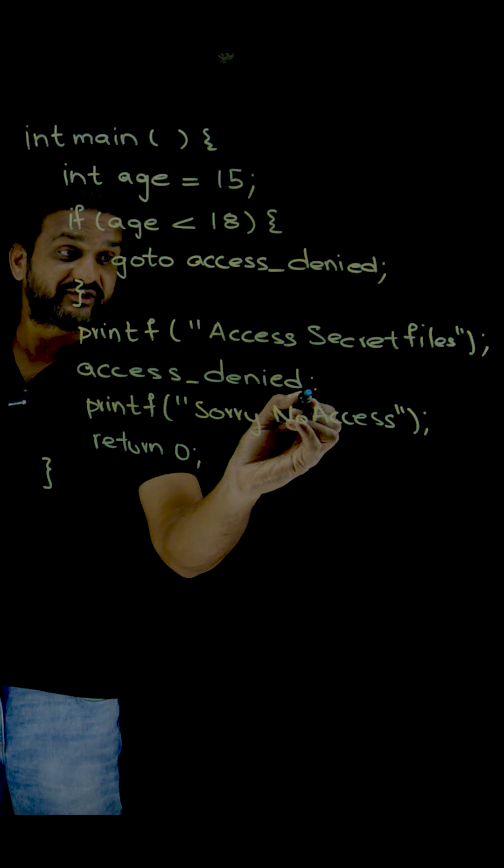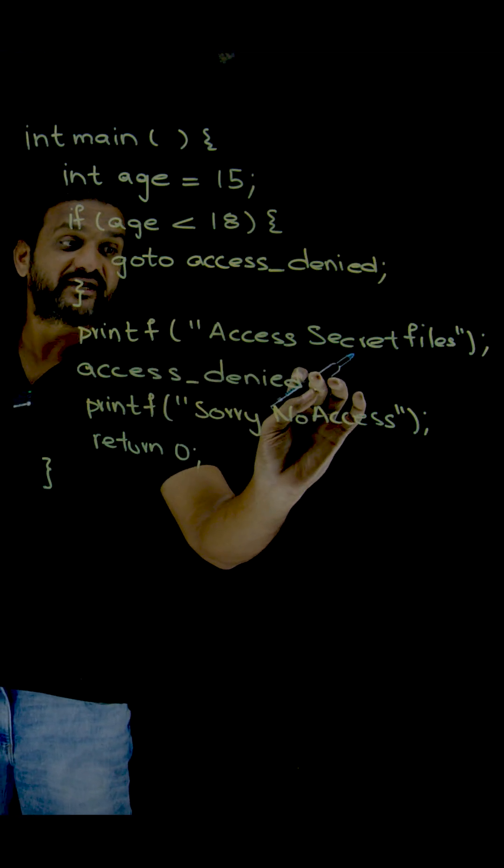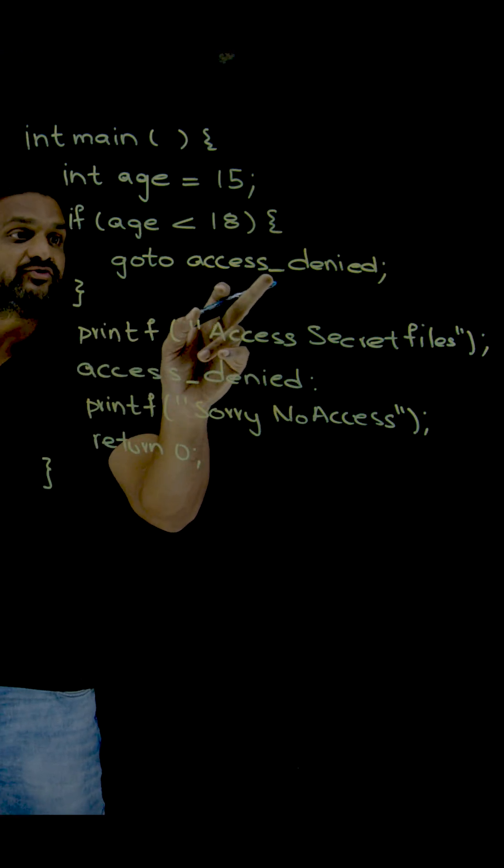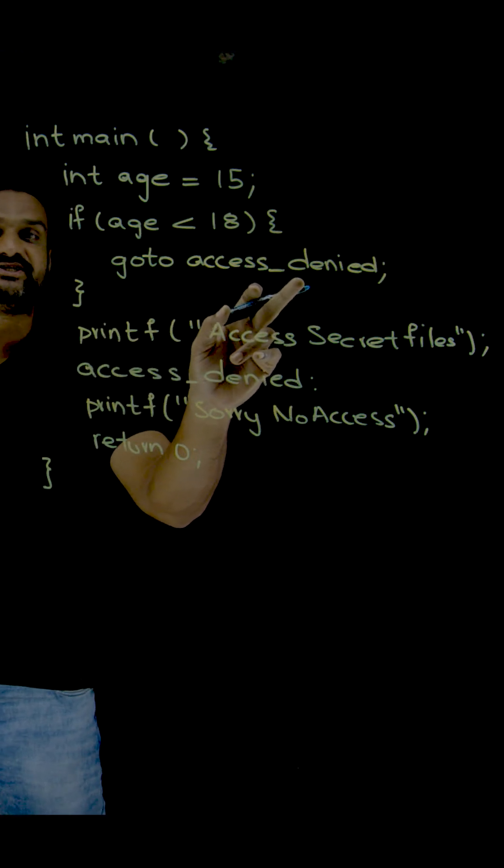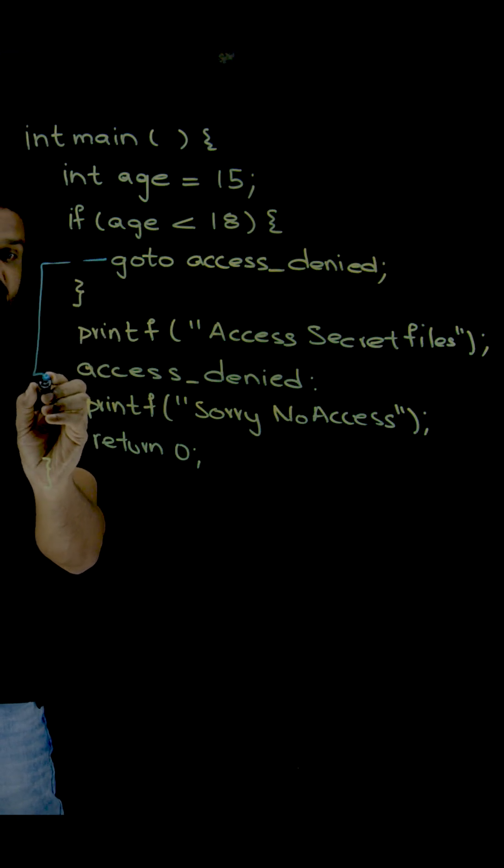Make a note of it. So whenever goto access_denied gets executed, shift your program execution to this part and execute this printf statement.